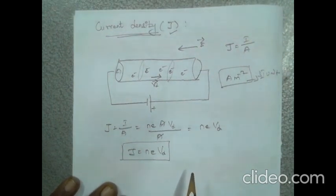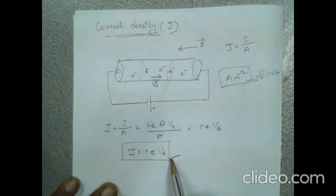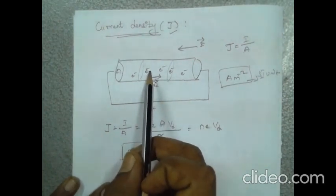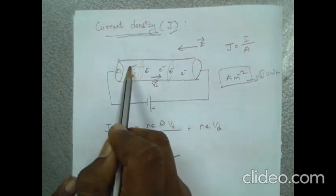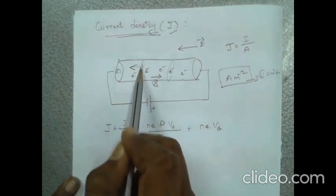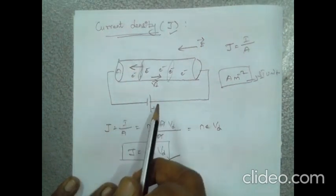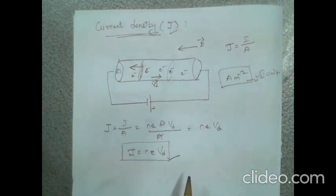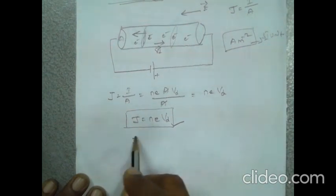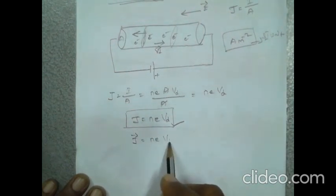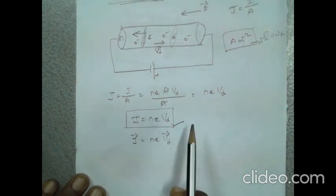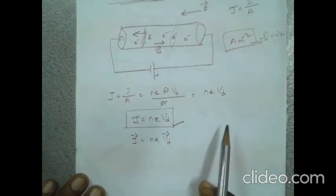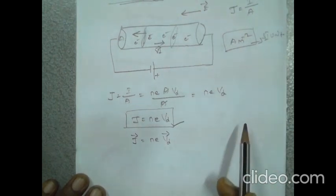When the direction of current is perpendicular to the area of cross-section, the equation is valid. The vector form is: J vector equals n e VD vector. Note that current is a scalar quantity, while current density is a vector quantity.